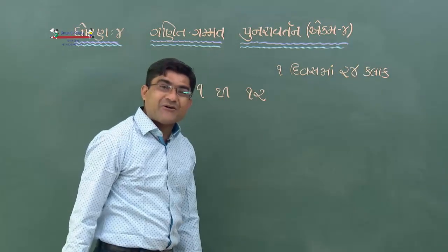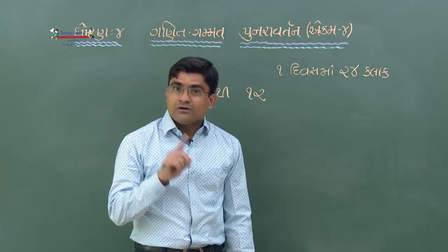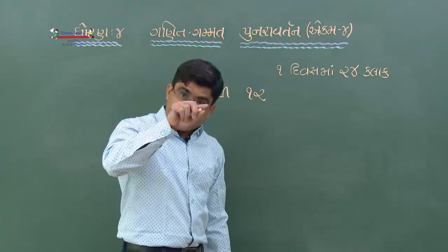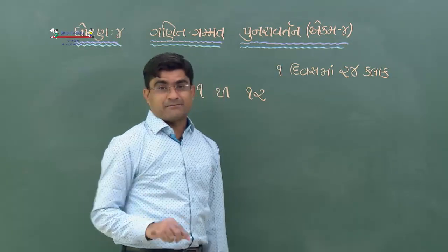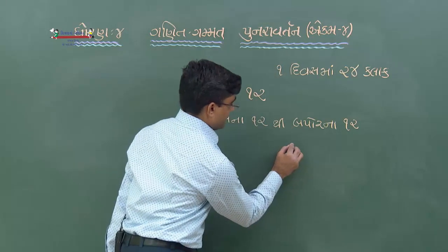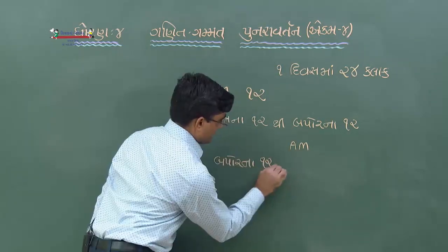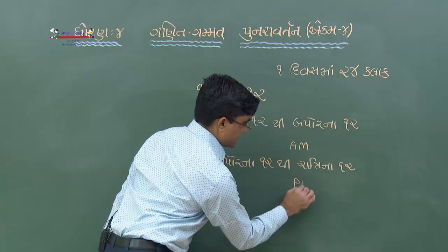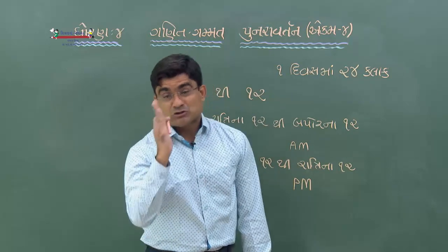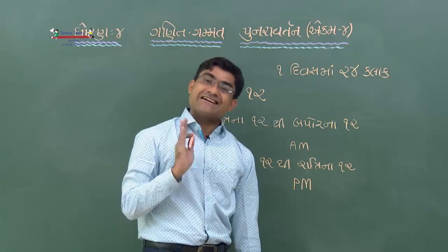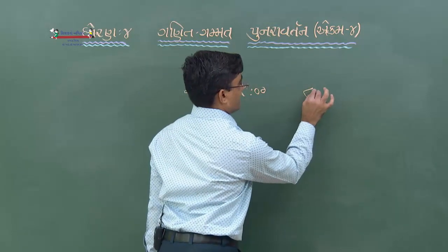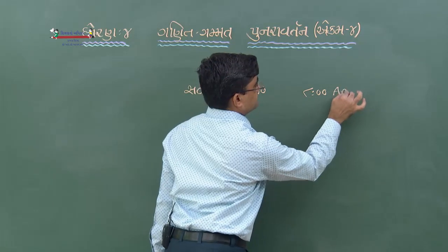ઘડ્યારમાં 1 દિવસ = 24 કલાક. ઘડ્યારમાં કલાક કાંટો 1 દિવસમાં 2 પૂરા ચક્કર લગાવે. પહેલું ચક્કર - 12 AM. ફરીથી 12 PM. સવારના 8 = 8 AM, સવારના 11 = 11 AM.